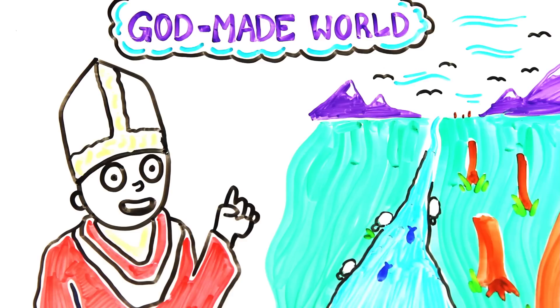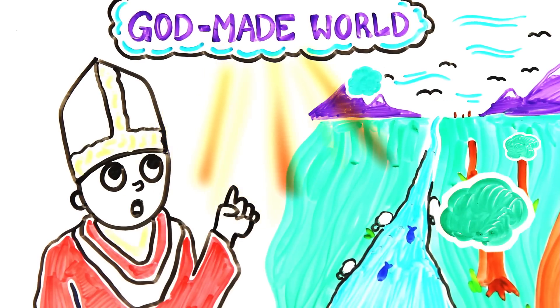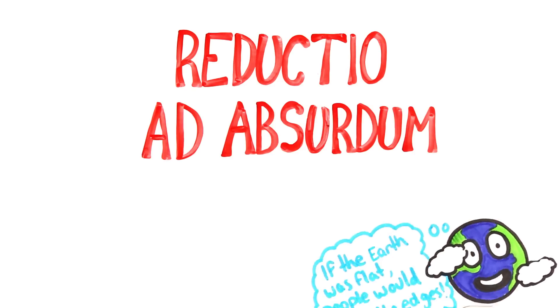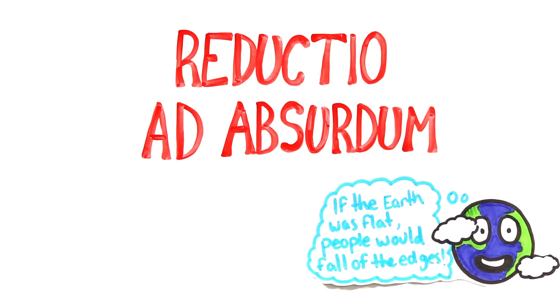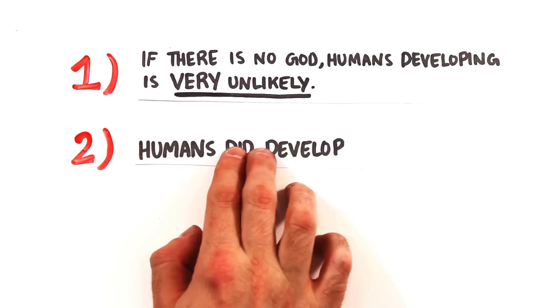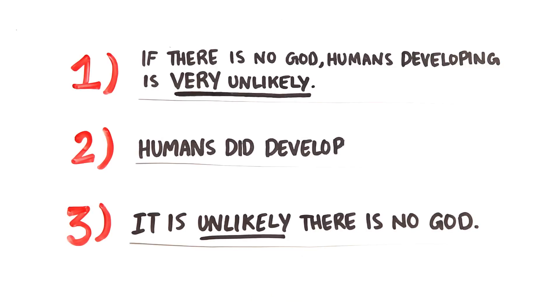So a religious person may argue, doesn't it seem much more plausible that there was some driving force behind it all? This type of argument is called reductio ad absurdum, which simply means it attempts to disprove a statement by showing it inevitably leads to absurd or impractical conclusions. In this case, it suggests that 1. If there's no God, humans developing is very unlikely. 2. Humans did develop, therefore 3. It is unlikely that there's no God.